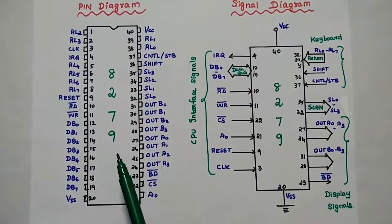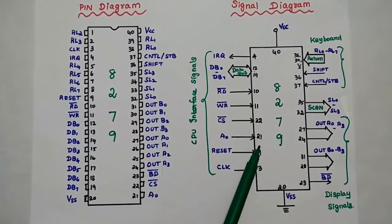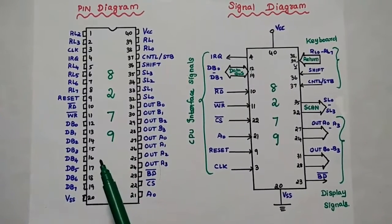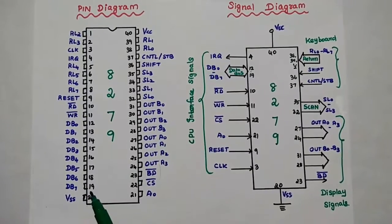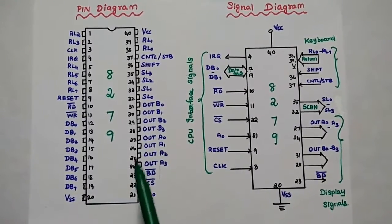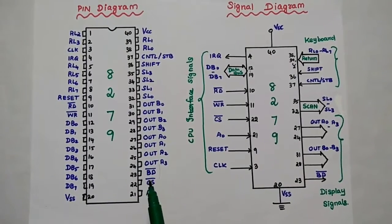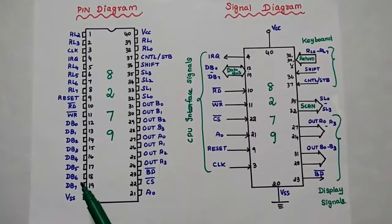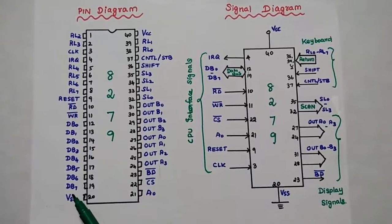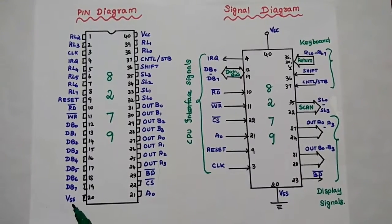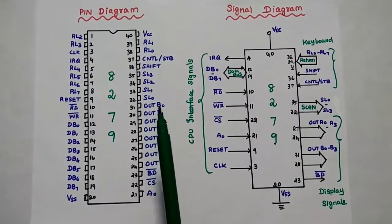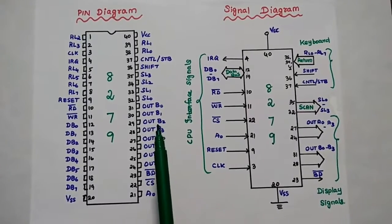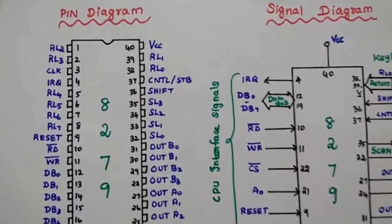This is the pin diagram of 8279 — it is a 40-pin dual inline package IC. It has 20 pins, numbered 1 to 20 on the left-hand side from top to bottom, and pins 21 to 40 on the right-hand side from bottom to top. The 20th pin is VSS (ground) and the 40th pin is VCC (power supply). The 8279 requires +5 volts for its operation.